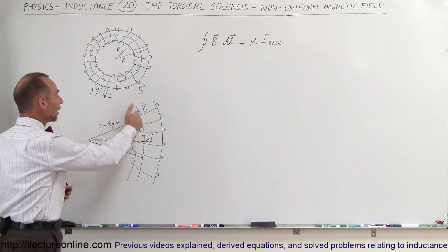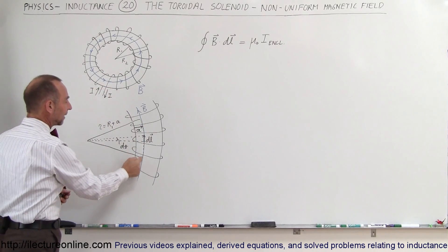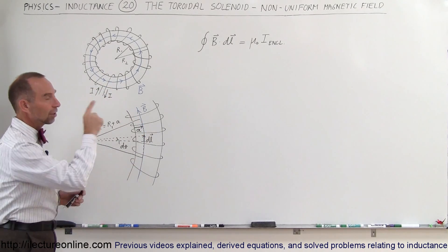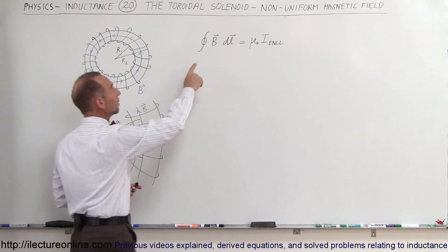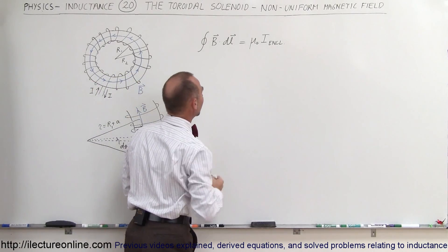So all we have to do is integrate all the way around the toroidal solenoid at this particular path. So there's the equation we're going to use. The closed loop integral B dot DL equals mu sub naut times I enclosed.